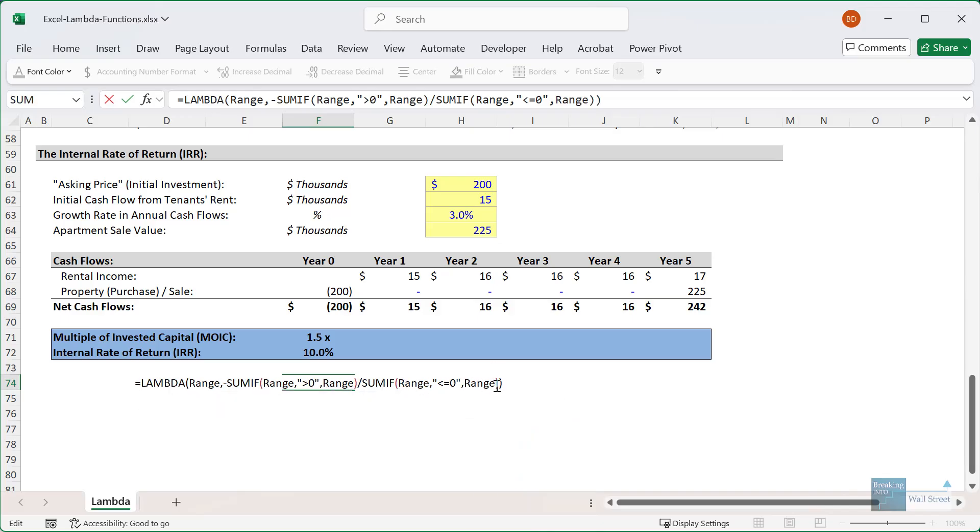Now, of course, if we enter this as is, we get a calculation error because we need to pick a range of cells to actually apply this to. So let's pick F69 through K69 right up here. And we get to exactly the same multiple invested capital, but now we've rewritten it in lambda function form.